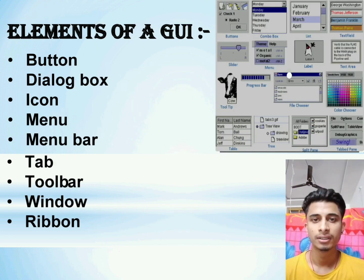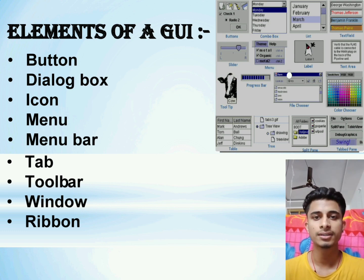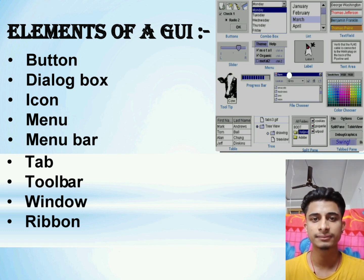There are many elements of GUI, as you can see: button, dialog box, icon, menu and so on. With all of these, you can easily access your device.